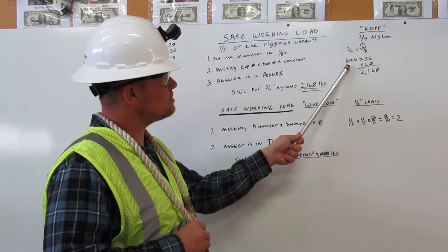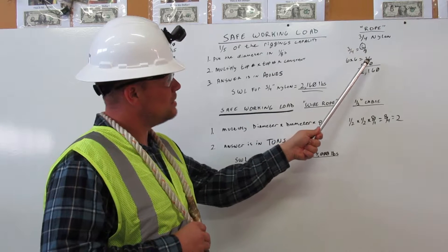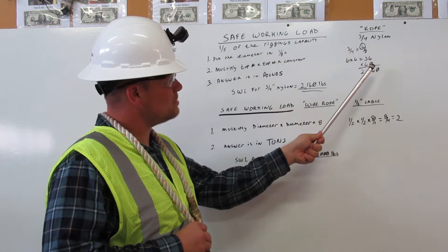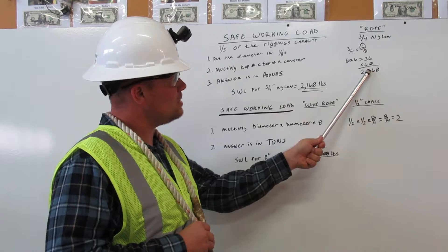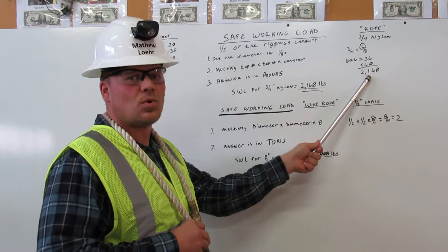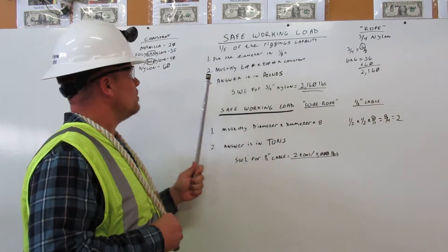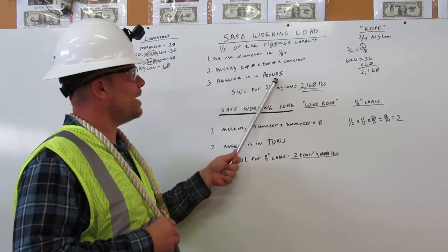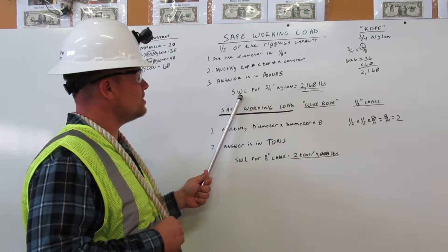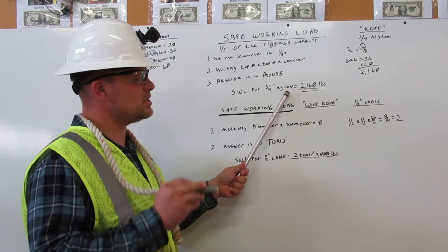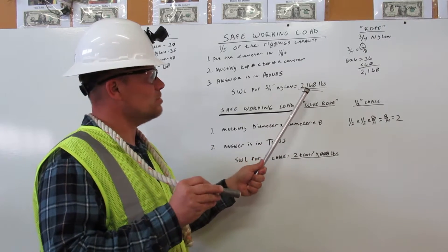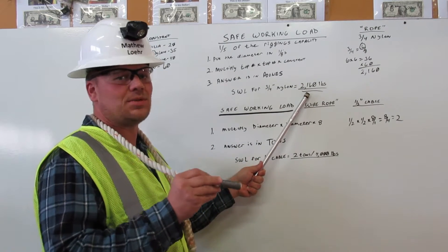you will multiply six times six equals 36, times 60 gives you 2,160. Number three, your answer is in pounds. So the safe working load for a three-quarter inch nylon rope is equal to 2,160 pounds.